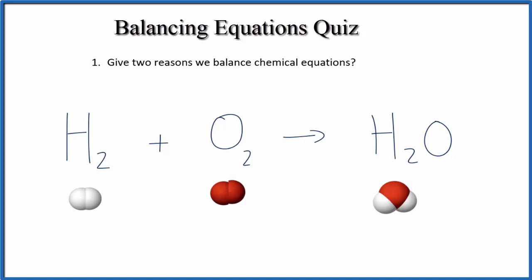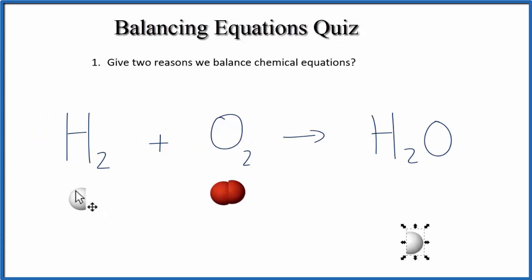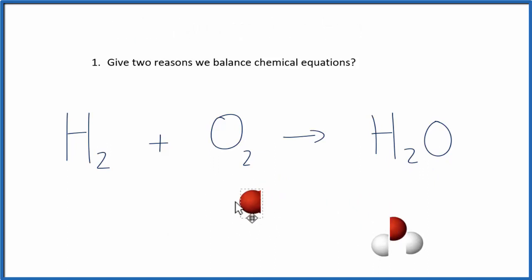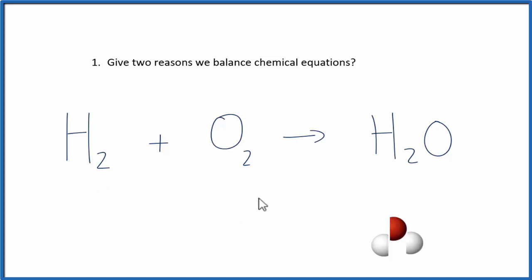There are two main reasons we balance chemical equations. The first is to obey the law of conservation of mass, and the second is to get those ratios — those coefficients. Here we have our equation showing how these molecules might look: H2, O2, and H2O. These two combine to produce this, but when the reaction happens, there's an extra oxygen that doesn't show up in our equation, so we're not obeying the law of conservation of mass.